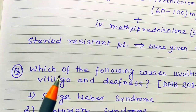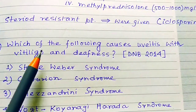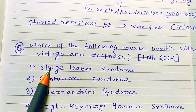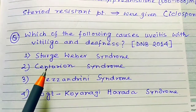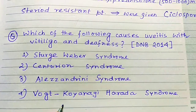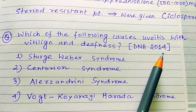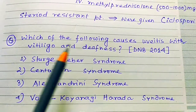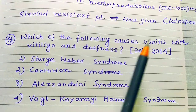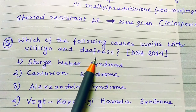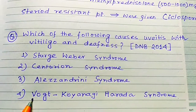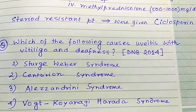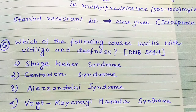Practice question from DNB 2014: Which of the following causes uveitis, vitiligo, and stiffness? Options: Sturge-Weber syndrome, Centurion syndrome, Alessandrini syndrome, or Vogt-Koyanagi-Harada syndrome. The answer is Vogt-Koyanagi-Harada syndrome, as uveitis and vitiligo indicate melanocyte involvement. Thank you for watching — please like and subscribe for more videos.